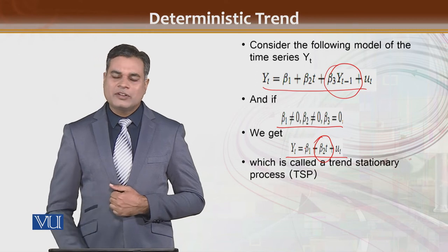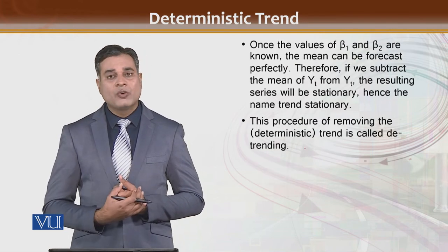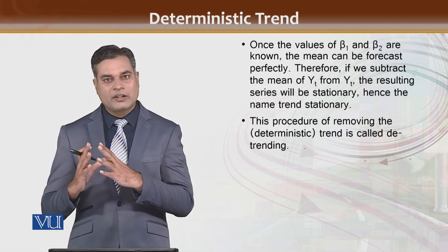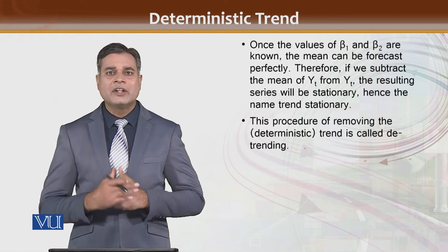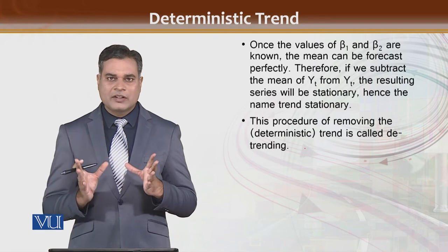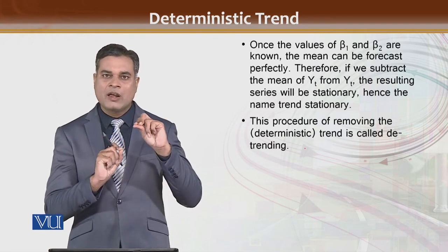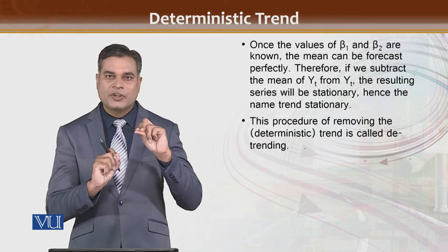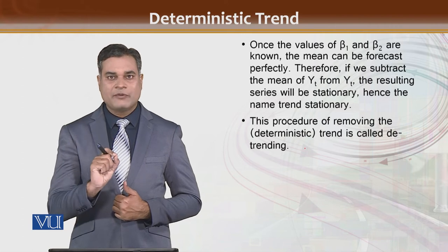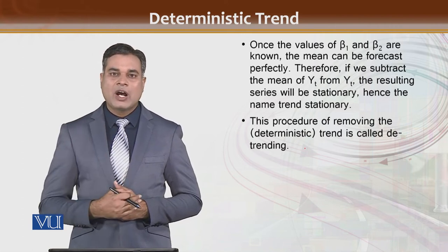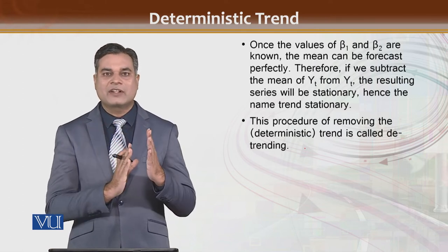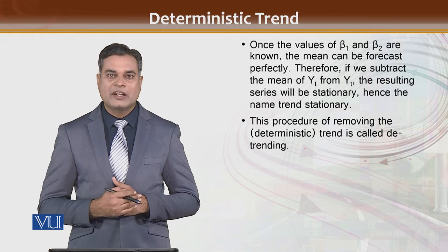Toh jis waqt value me deterministic trend hoga, usko non-stationary se stationary banane ke liye procedure thoda sa different hoga. Like if you have a pure random walk, you can find the difference of the series — difference lenge toh uska random walk khatam ho jayega aur wo series aapki stationary ho jayegi aur usme unit root khatam ho jayega. Agar aapki series me deterministic trend hai with the passage of time, toh aapne simply usme se har y ki value mein se uska mean minus kar lena hai — y minus y-bar.